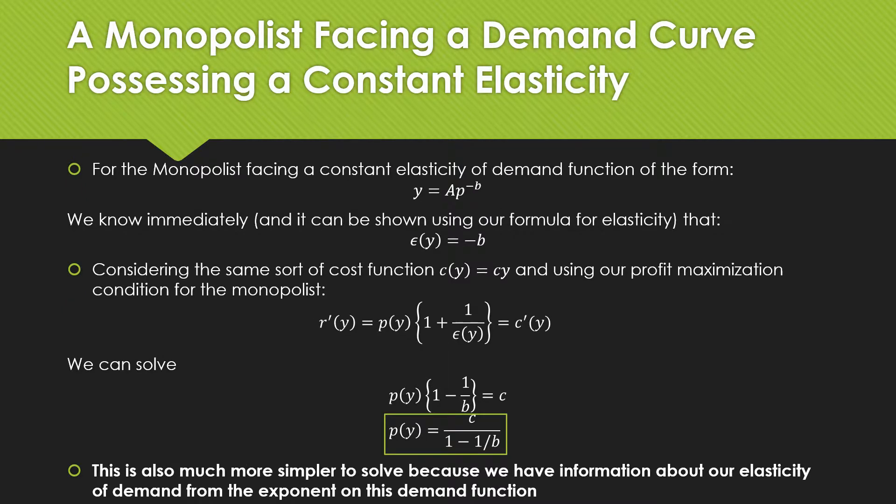In our second case, for the monopolist facing a constant elasticity of demand function of the form y = ap^(-b), again this is not an inverse demand function, this is a direct demand function. We know immediately, and it can be shown using our formula for elasticity, that this elasticity of demand is just equal to negative b, meaning that we're pulling it from the exponent. Considering the same cost function c(y) and using our profit maximization condition, we set our marginal revenue equal to our marginal cost.